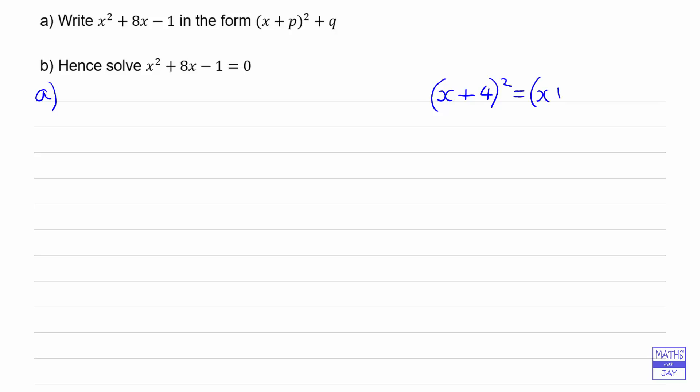So that's x plus 4 multiplied by itself. So when we multiply that out we get x squared plus 4x plus another 4x, and then 4 times 4 is 16.